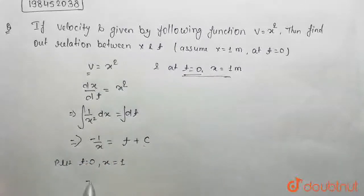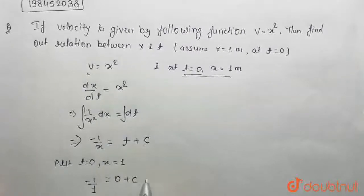So, minus 1 by x value will be 1 is equal to 0 plus c. From here the value will be c is equal to minus 1.